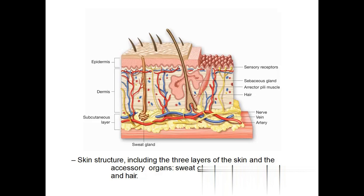The meaning of dermis is 'true skin.' The subcutaneous layer is the basal layer and consists of fat. The fat is first stored under the skin, and because of this subcutaneous fat our skin will be shiny and glowing. We also call the subcutaneous layer the hypodermis — both are the same.